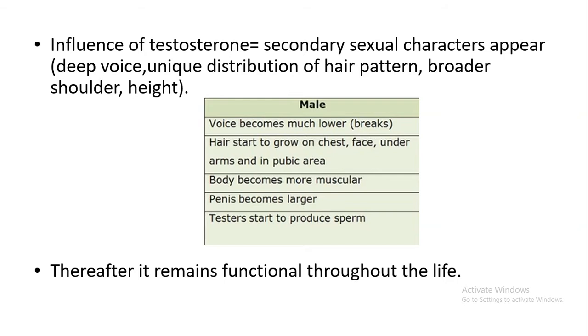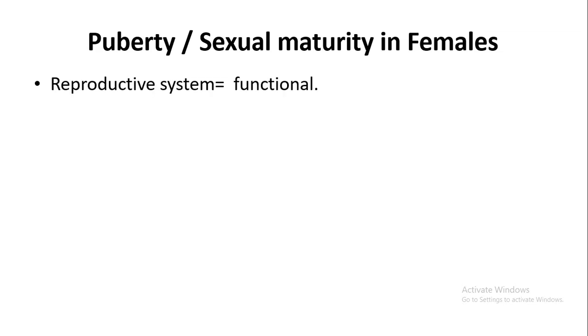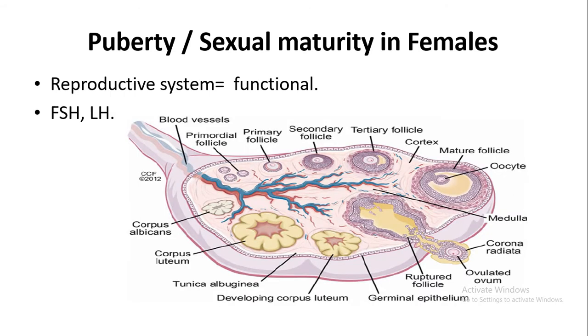When reproductive organs are functional, then they are functional throughout their life. Now let's talk about the reproductive structure in the female. In the puberty stage, these systems become functional. There are also some hormones, such as follicle stimulating hormone and luteinizing hormone.